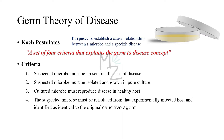Let's talk about these four postulates. The first one is that the suspected microbe must be present in all cases of disease and must be absent in all healthy individuals. Number two is that the suspected microbe must be isolated from the diseased person and then grown in a pure culture. Number three is that these cultured microbes must reproduce the disease in a healthy host. Postulate number four is that the suspected microbe must be re-isolated from that experimentally infected host and identified as identical to the original causative agent.